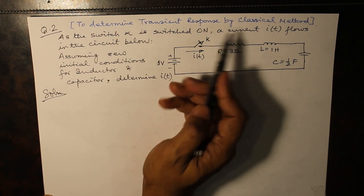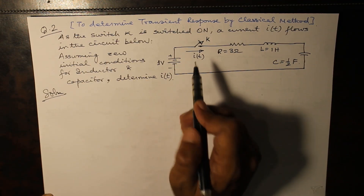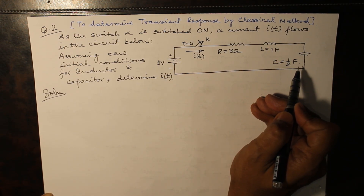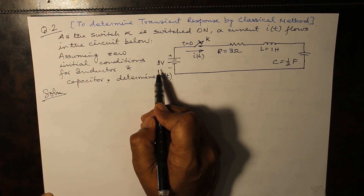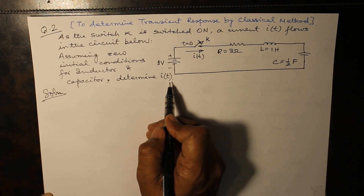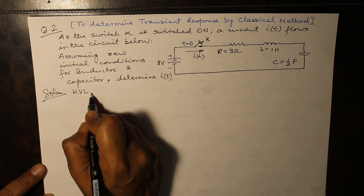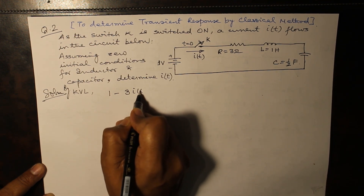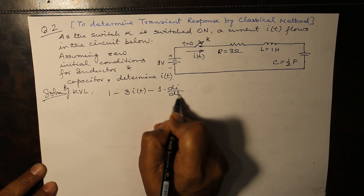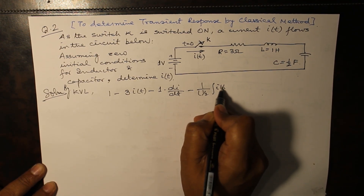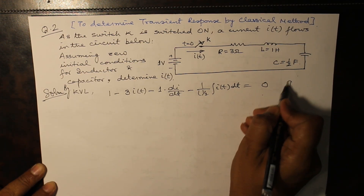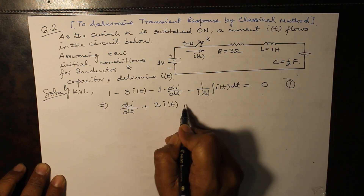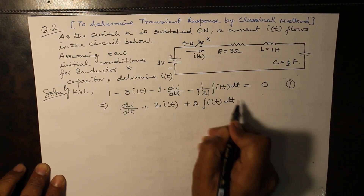Next we take up an example to determine the transient response by the classical method. In this question, switch k at t=0 is closed and we have resistance, inductance, and capacitance values indicated in the circuit. There is a unit step excitation, that is a DC excitation of 1 volt. Assuming zero initial conditions for inductor and capacitor, we have to determine i(t). By KVL: 1 minus 3i(t) minus 1 times dI/dt minus (1/0.5)∫i(t)dt = 0, which gives dI/dt + 3i(t) + 2∫i(t)dt = 1.